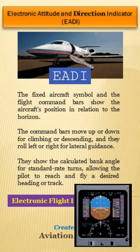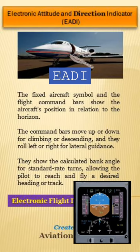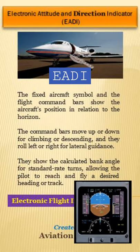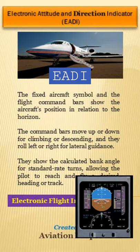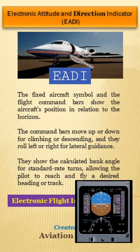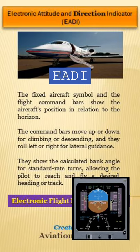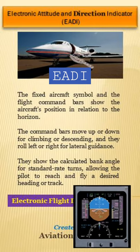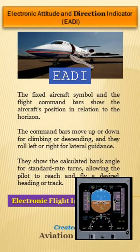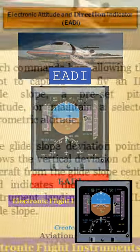The fixed aircraft symbol and the flight command bars show the aircraft position in relation to the horizon. The command bars move up or down for climbing or descending and they roll left or right for lateral guidance. They show the calculated bank angle for extended rate turns, allowing the pilot to reach and fly a desired heading or track.